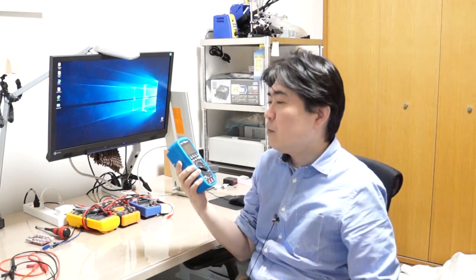On the EEVblog forum I saw a person who doesn't even own a 121GW multimeter made patches to improve the auto-ranging speed, and now the latest version 1.10 is out, so I would like to upgrade the firmware.